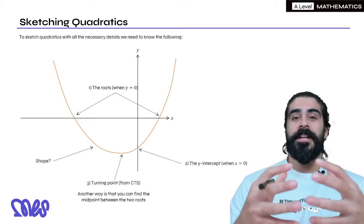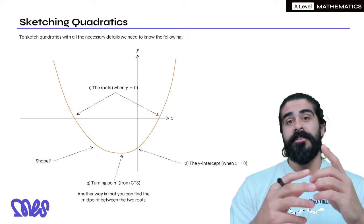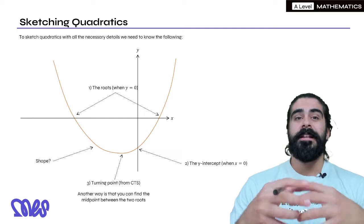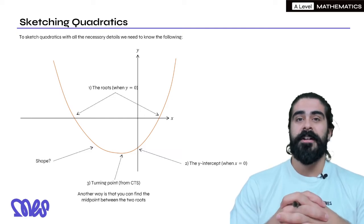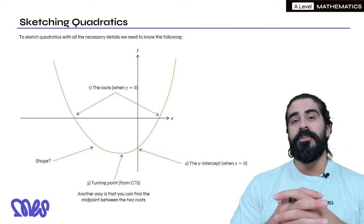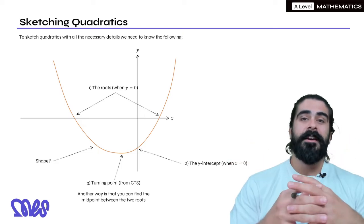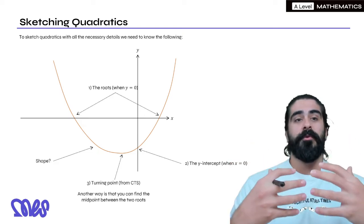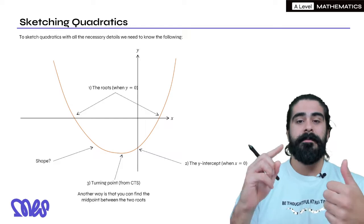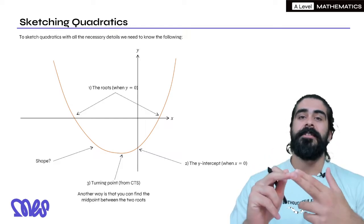Hey guys, welcome to part two of sketching quadratics. In the last lesson we looked at how completing the square links to finding the turning points of a quadratic and also transformations of the x squared graph. Now we're going to tie all of that together to do a full sketch of a quadratic by labeling the roots, the y-intercept, and the turning point.